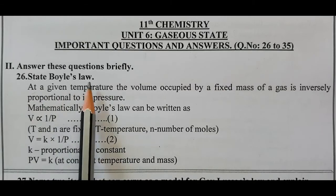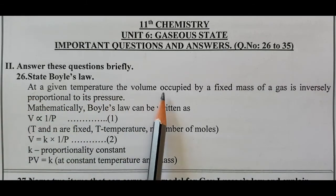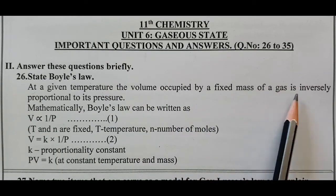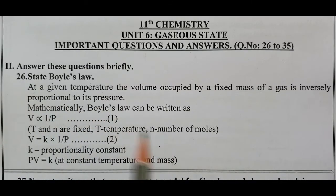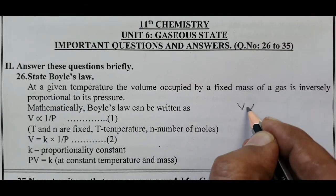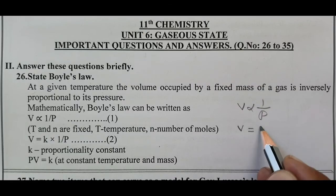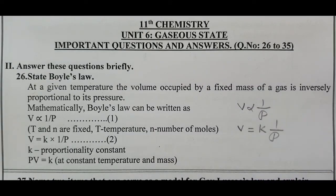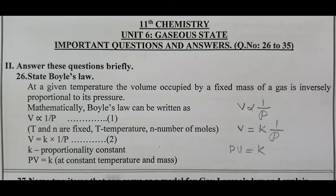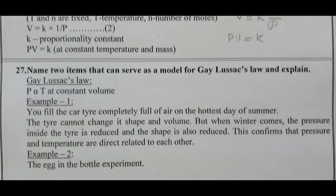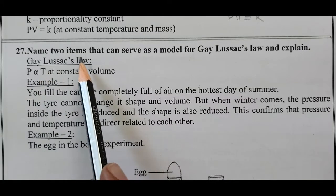State Boyle's Law: At a given temperature, the volume occupied by a fixed mass of a gas is inversely proportional to its pressure. Mathematically, Boyle's law can be written as V is inversely proportional to P. To convert the proportional sign into an equal sign, we add a constant K, so V = K × (1/P), or bringing pressure to the left-hand side, PV = K constant. This is applicable at constant temperature and fixed mass.